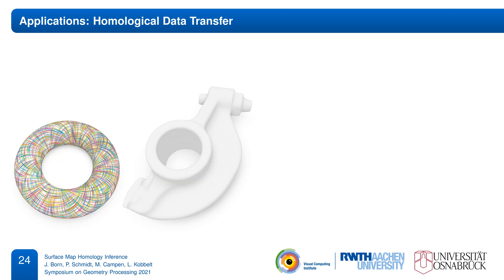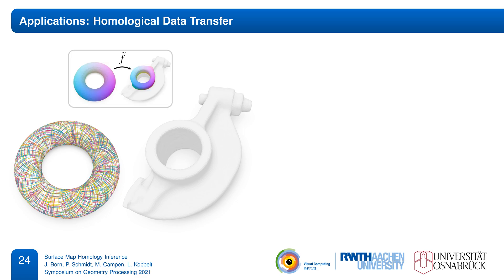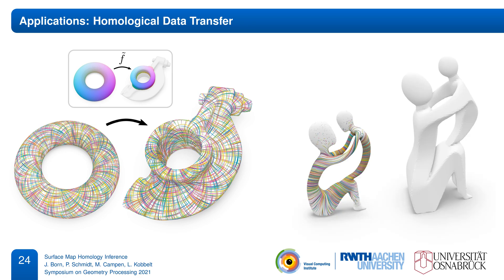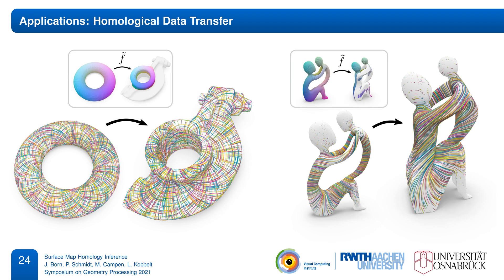One direct application of homology maps is the transfer of data between homology bases. For example, we can use an inferred homology map to transfer the turning behavior of a direction field from one surface to another. Similarly, we can map the flow of harmonic vector fields from surface to surface using a cohomology map.